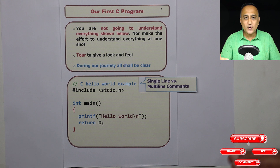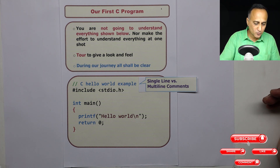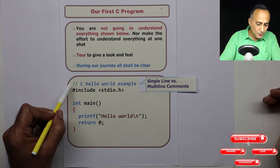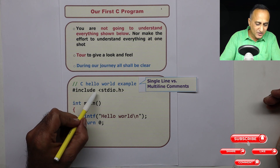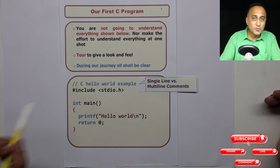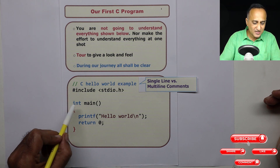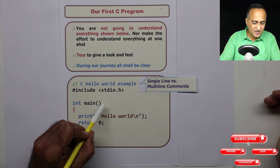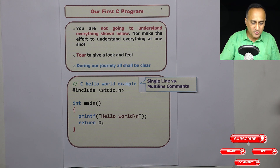Later on when we discuss comments, I will talk about multi-line comments also. Suppose I put this double slash after the letter E here — everything after E is going to be treated as a comment. So this double slash can start here, or here, or here. It really depends on you.